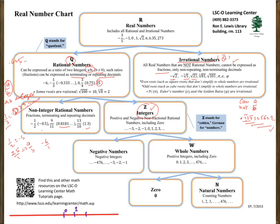Now we will see how integers are further divided. Integers are complete numbers like -3, -2, -1, 0, 1, 2, 3, 4, 5. Integers are divided into negative numbers and whole numbers. Negative numbers are -1, -2, -3, -4, -5 going left up to minus infinity. Whole numbers include zero and all positive numbers going right — 0, 1, 2, 3, 4, 5 up to infinity. All positive integers including zero form the whole numbers.